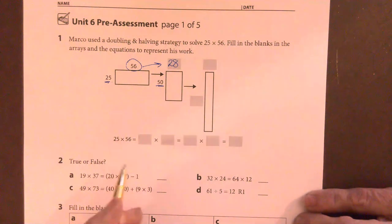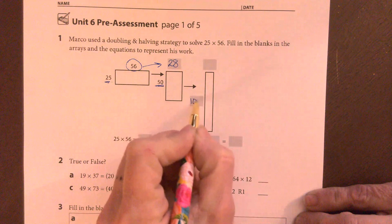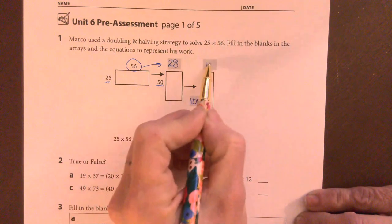So staying with the same pattern, if he doubles the 50, he should get 100. If he halves the 28, he should get 14.